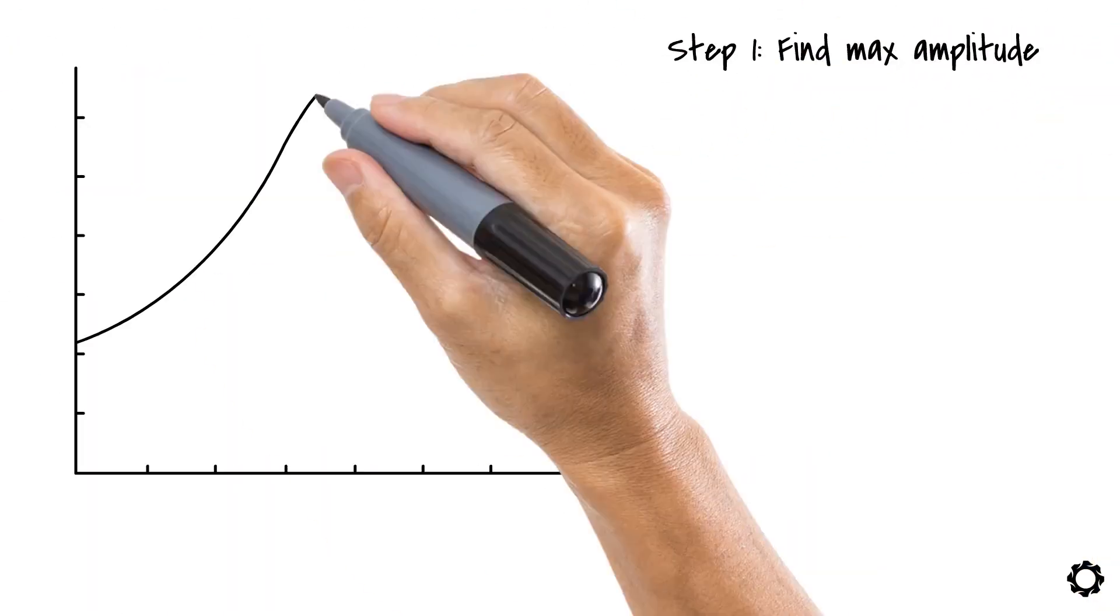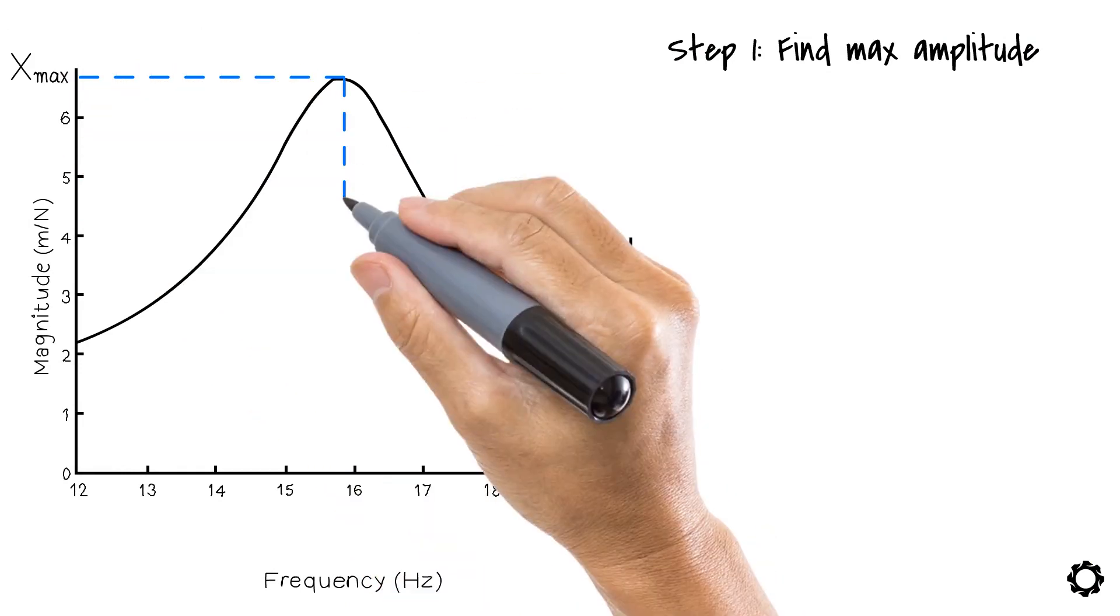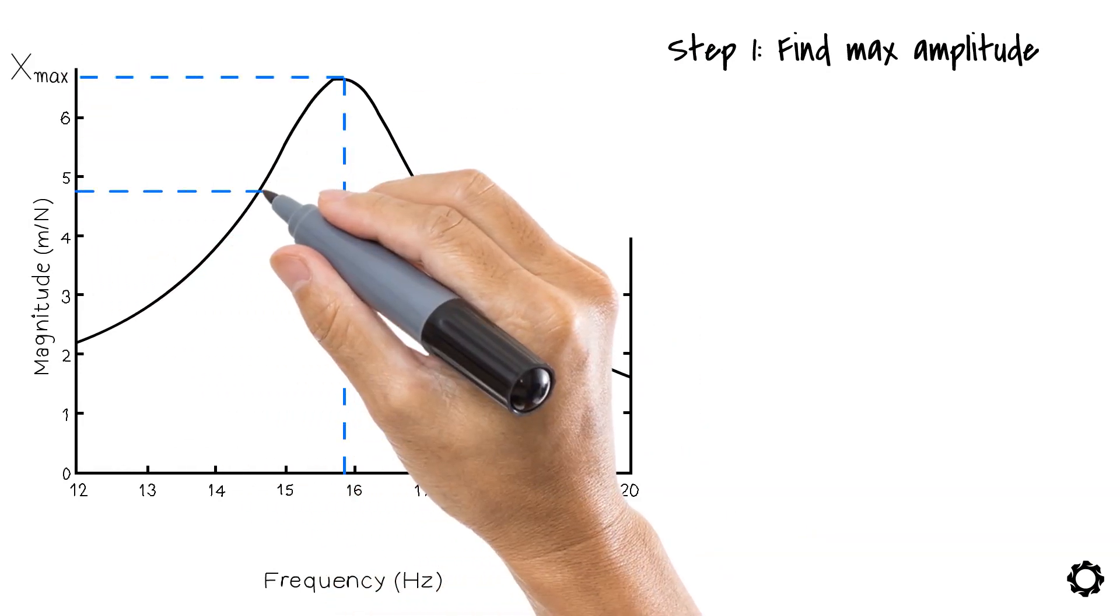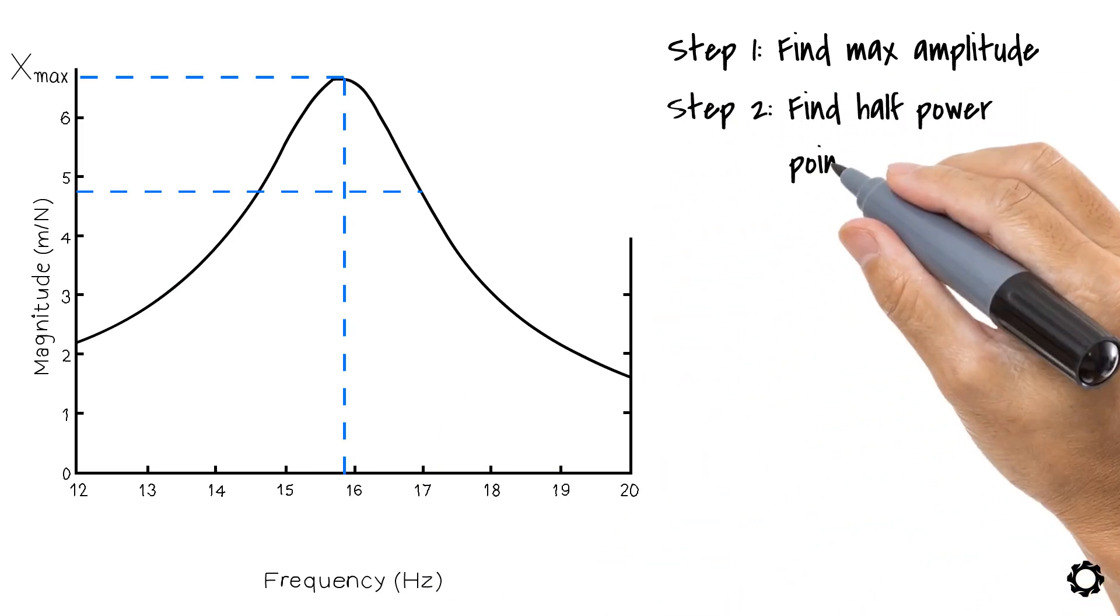From the resonance peak, we get the maximum amplitude. Then from the plot, we find the points where the amplitude is the maximum amplitude divided by the square root of 2. There will be two such points on either side of the resonance peak. These points are called half power points.